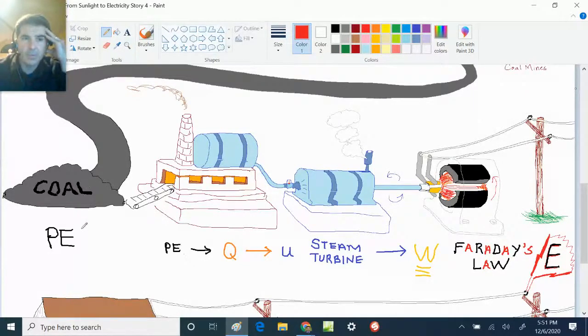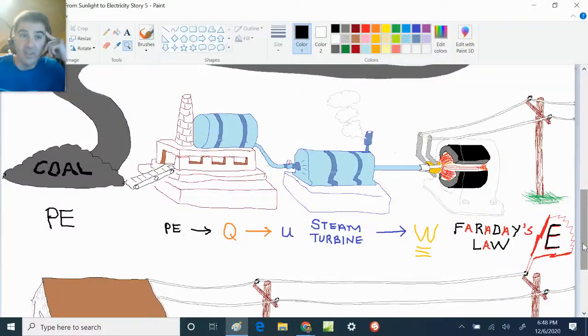So as we go through here, we have the coal, which is our chemical potential energy. We burn that to make heat. That heat, Q, is going to go into our water to make steam, which will make internal energy U. That steam will go through the steam turbine, which will spin. That spinning will turn into work. And that work will give us electricity. So that energy will be turned into electricity.